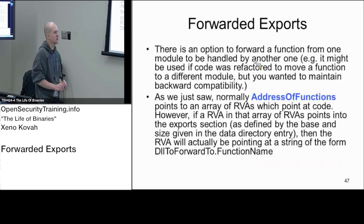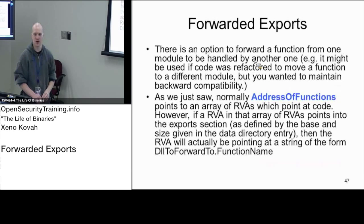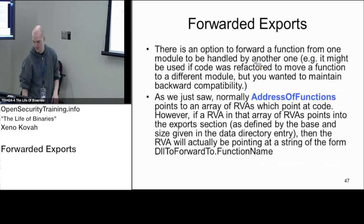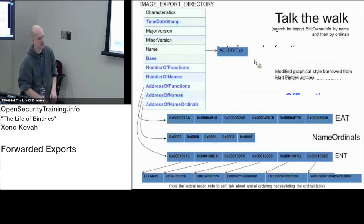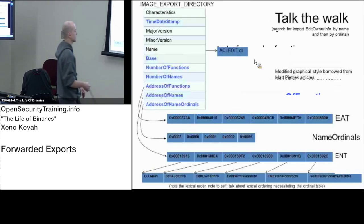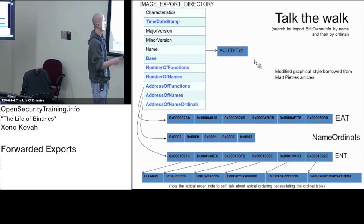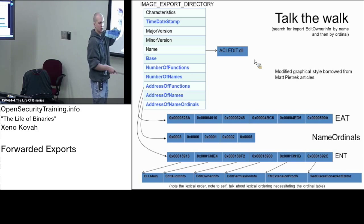There is one corner case for exports that is the reason we have more complicated bound imports. With normal exports, you're giving a big list of all the strings of the names of the stuff you export, and you're giving RVAs. These RVAs are within your own module space.